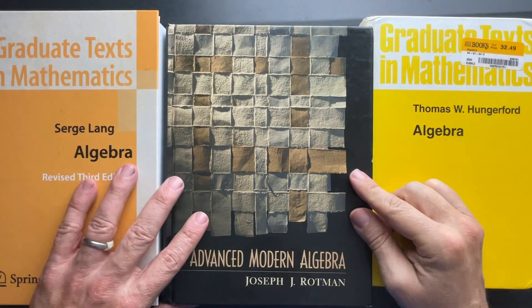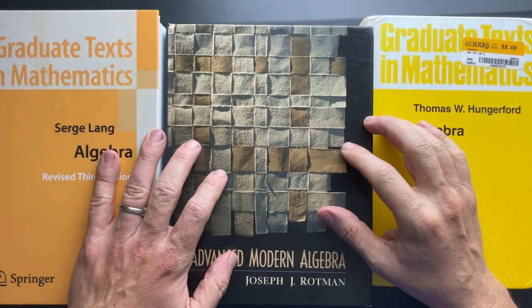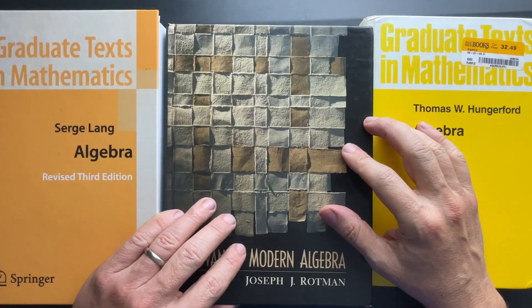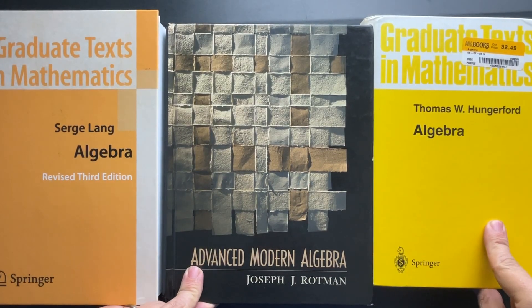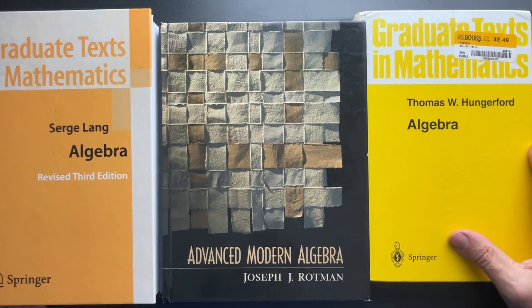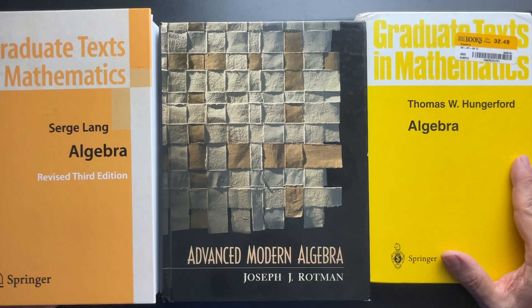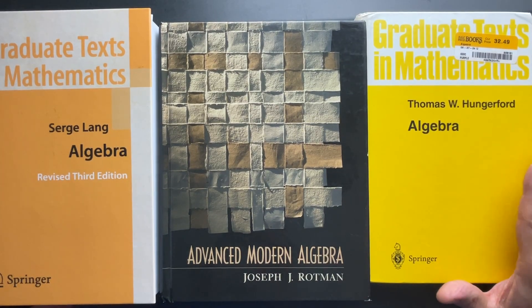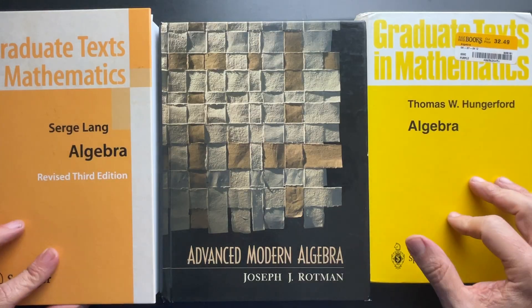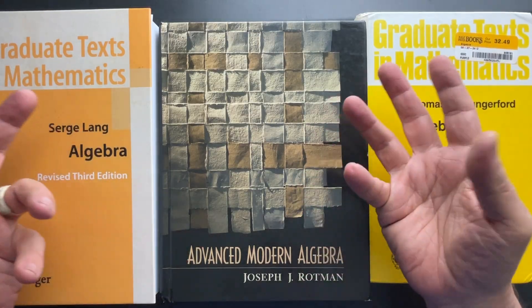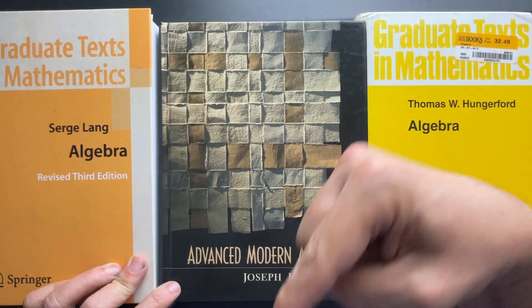This is the second part of an uninformed, as I admit to be, comparison between three graduate-level abstract algebra books. All I have done is self-learn group theory out of Gallian at this point, so I'm barely qualified to make this comparison. But I will try, and just let me know if it's of any use to you.